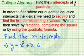In this lesson, we want to find the x-intercepts of a parabola. In order to find where our quadratic equation intersects the x-axis, we need to set y equals zero and find the two corresponding x values. We can then solve by either the factoring method, completing the square, or by using the quadratic formula. Let's illustrate all three of those.